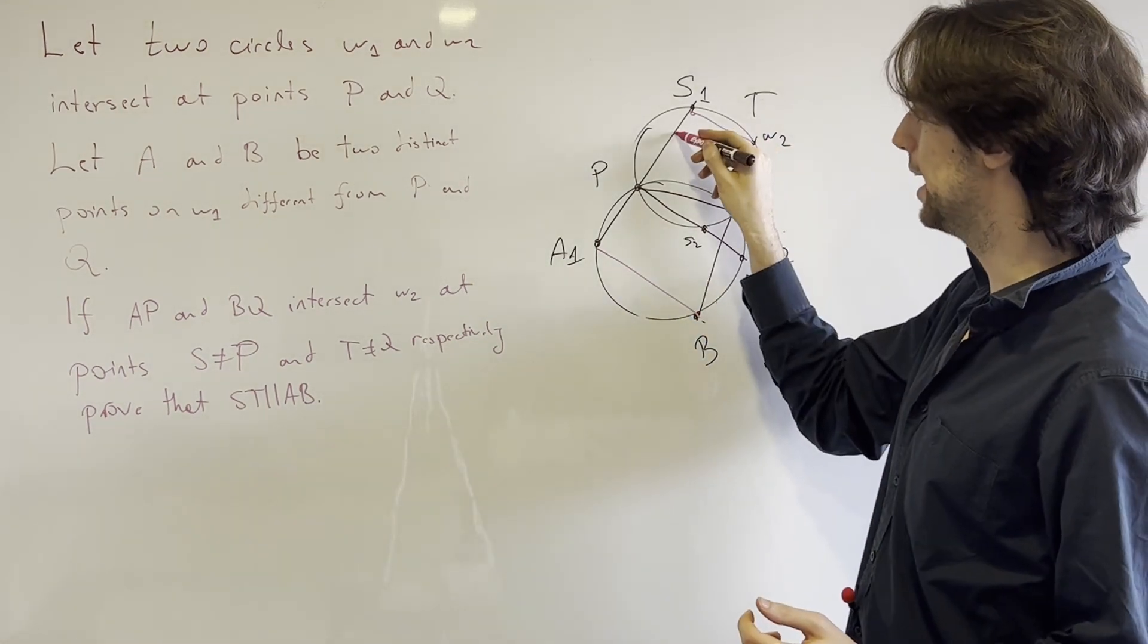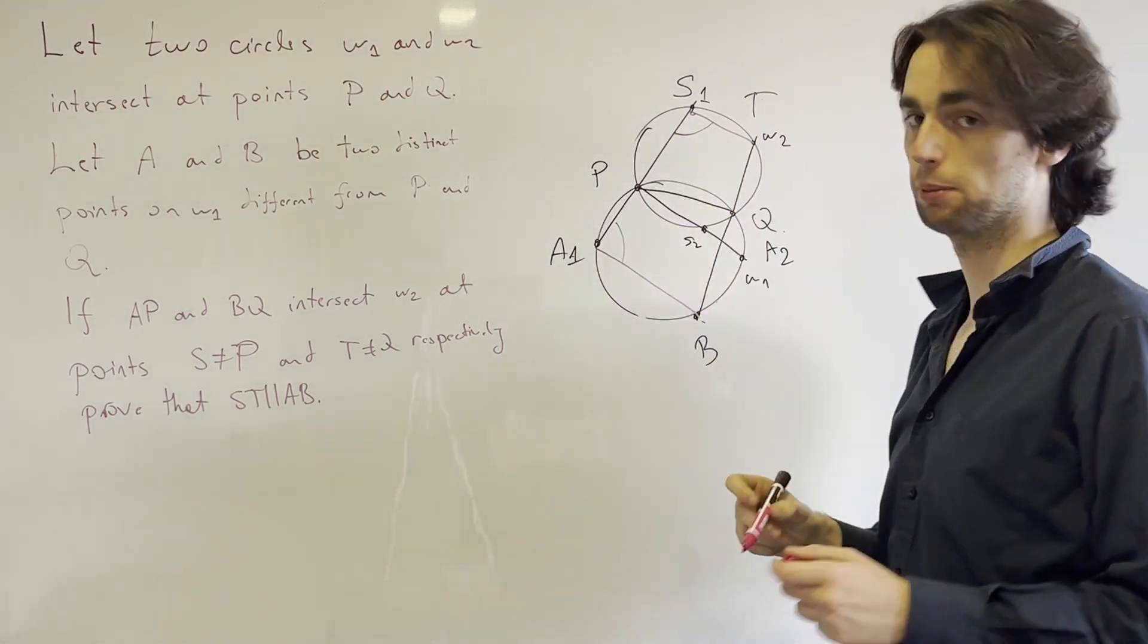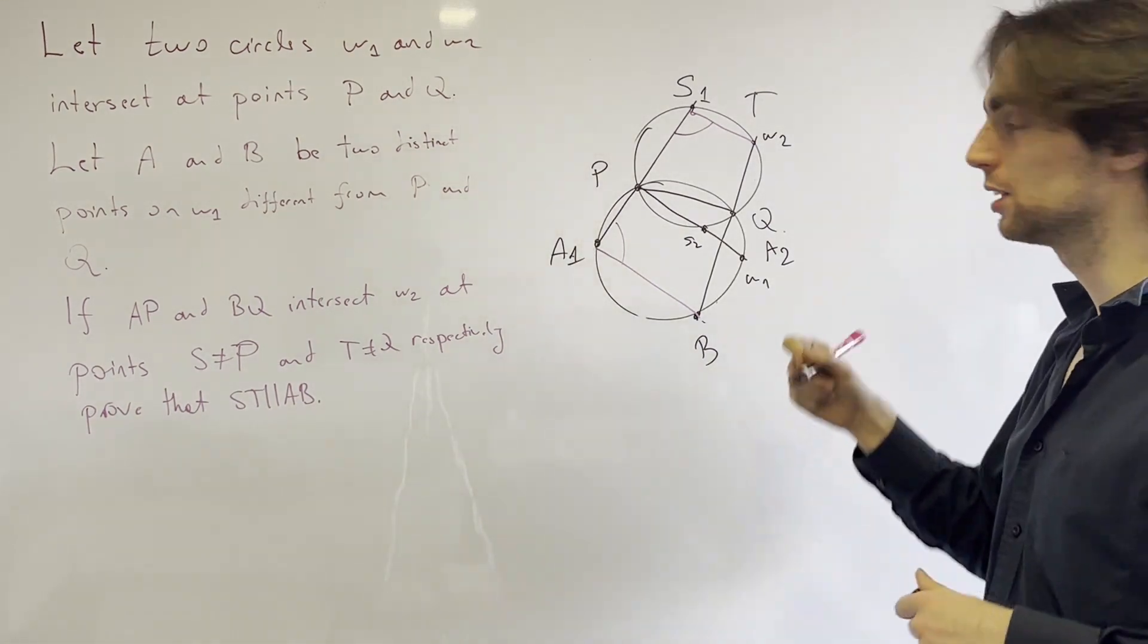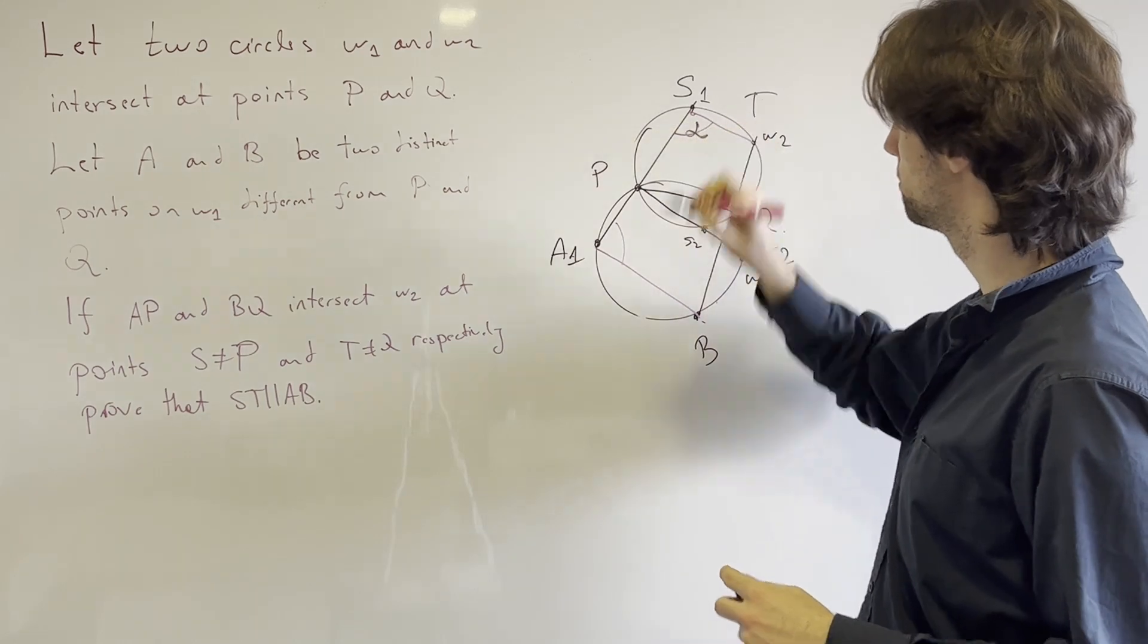Well I need this angle and this angle to sum up to 180 degrees. So what do I do? Well let me label this angle, let me call it alpha.